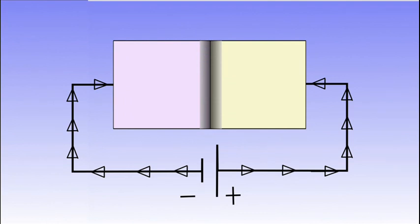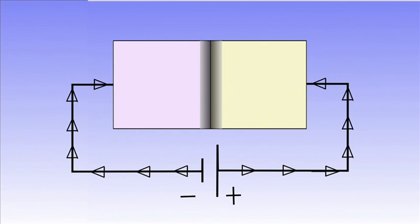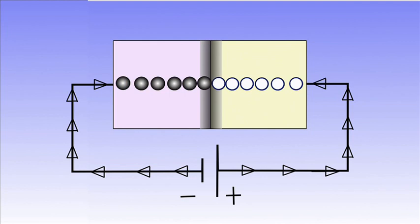Hence the width of the depletion region starts reducing due to reduction in the barrier potential. Large numbers of electrons and holes will cross the junction and make the current flow from anode to cathode.